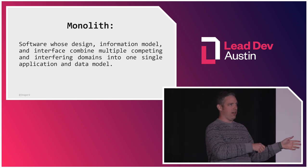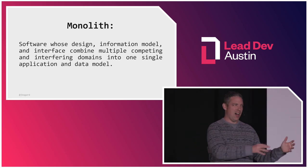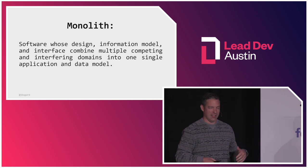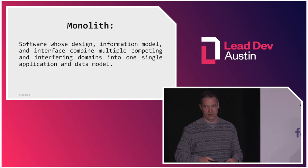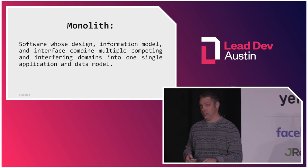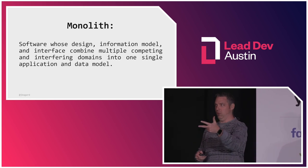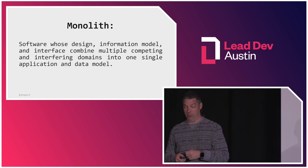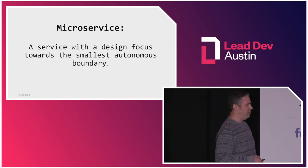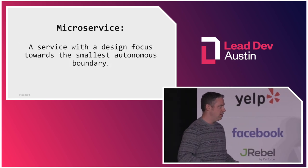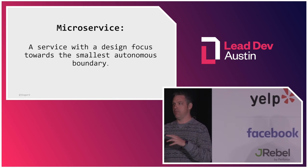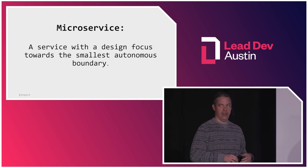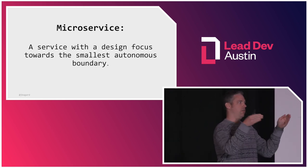A lot of people say instead of doing monoliths, we should just go do microservices. But the definitions of microservices aren't very descriptive. The microservice book says a microservice is software that is small and does one thing well — highly subjective criteria. My own definition is that a microservice is a service-oriented architecture in which we're angling towards the smallest possible still autonomous boundaries. Microservices aren't applications, components, widgets, or modules — they're still services, but we're trying to build towards small boundaries.